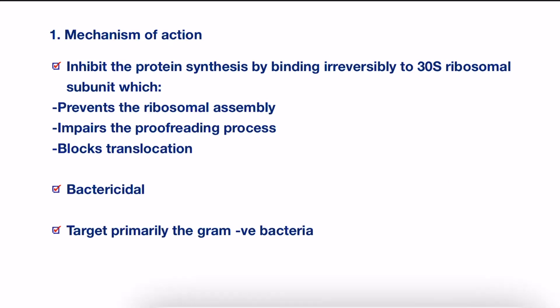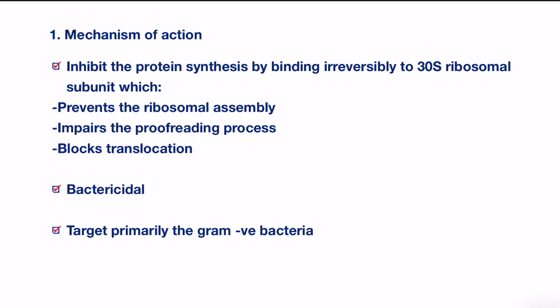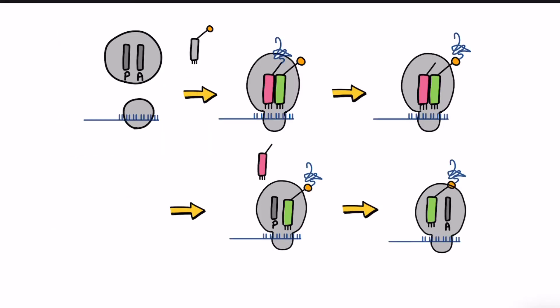First of all, how these drugs work. Aminoglycosides inhibit protein synthesis by binding irreversibly to the 30S ribosomal subunit, which in turn prevents ribosomal assembly, impairs the proofreading process, and blocks translocation. To understand their mechanism of action, let's take a quick look at the protein synthesis process that occurs in bacteria.